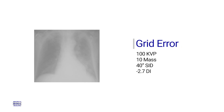If we look at our technical factors, they may appear to be in range. Looking at the image here: 100 kVp, 10 mAs, 40-inch SID, a grid portable chest x-ray — that all seems in line. But if you look at the DI, it's a negative 2.7.